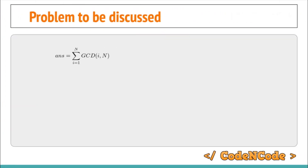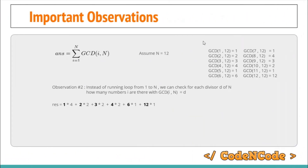The problem we started looking at in the previous lecture (lecture 20) was: we have to calculate the answer, which is actually the GCD sum of each number from 1 to N with N. Using a simple for loop, we can calculate this in O(n log n) time, but we wanted to improve the time complexity.